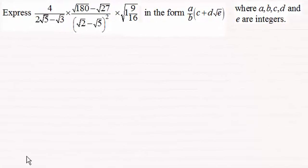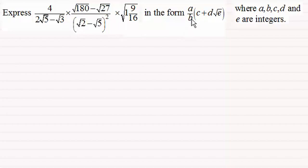Hi there, now for this question you've got to express all of this in the form a over b times c plus d root e, where a, b, c, d, and e are integers. Just give you a moment to pause the video. When you come back, fast forward if you want to just check the answer or I'll take you slowly through the solution. Good luck. Okay, welcome back then if you had a go.